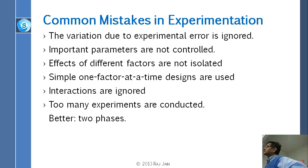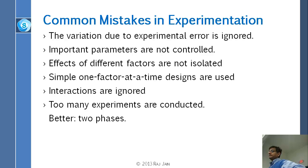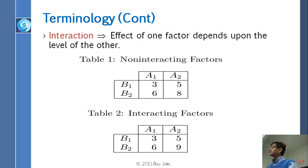These are the common mistakes — if you were to do experiments today without having taken this module, these are the mistakes you might make. First, the variation due to experimental errors is ignored — you don't know what the error is because you need replications. Important parameters are not controlled — something that can affect performance is left totally uncontrolled. Effects of different factors are not isolated — you cannot figure out the effect of each factor. Generally people will just leave it as a graph showing four plots and feel they have done their job, but they have not really isolated the effect.